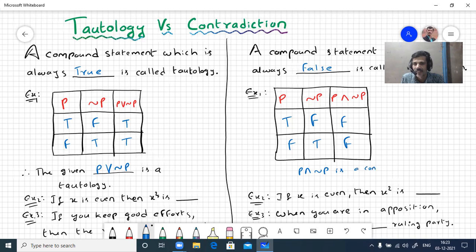One more example: if x is even, its square is even. This is always true. If you take any even number, it will be true. If x is even then x square is odd, this cannot happen.